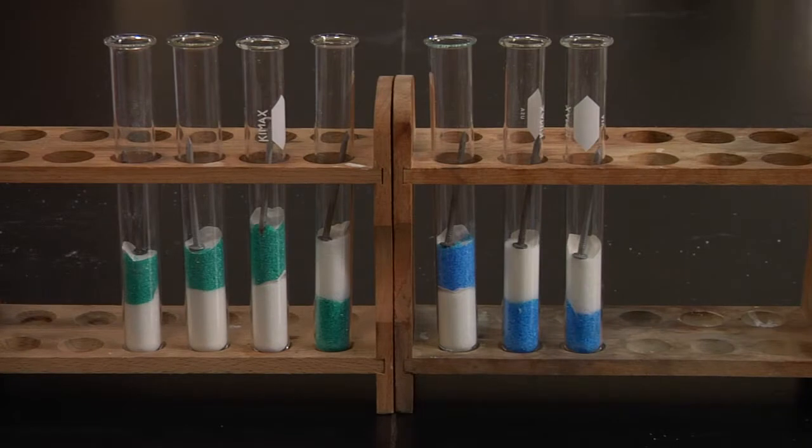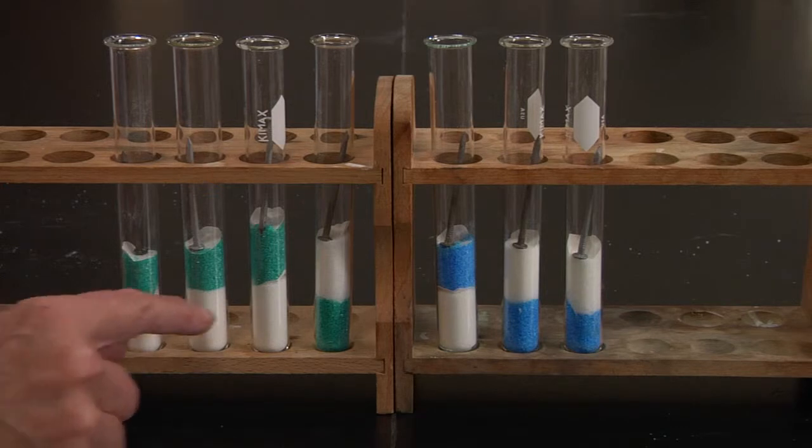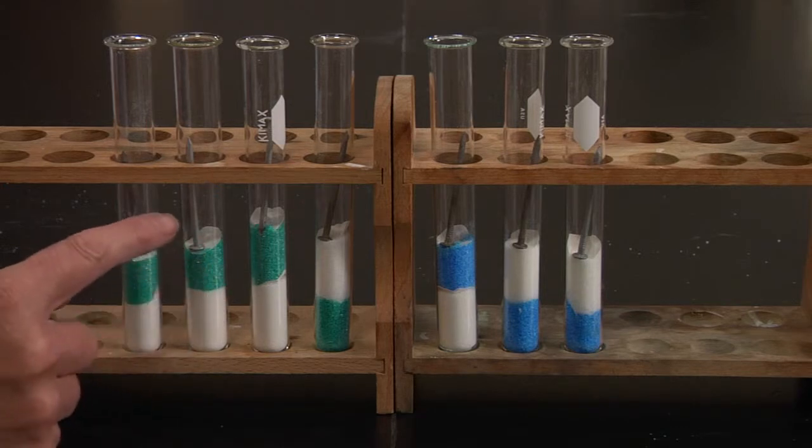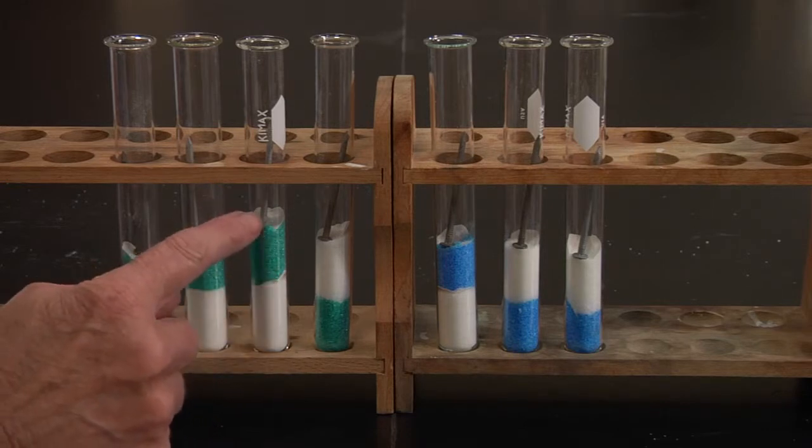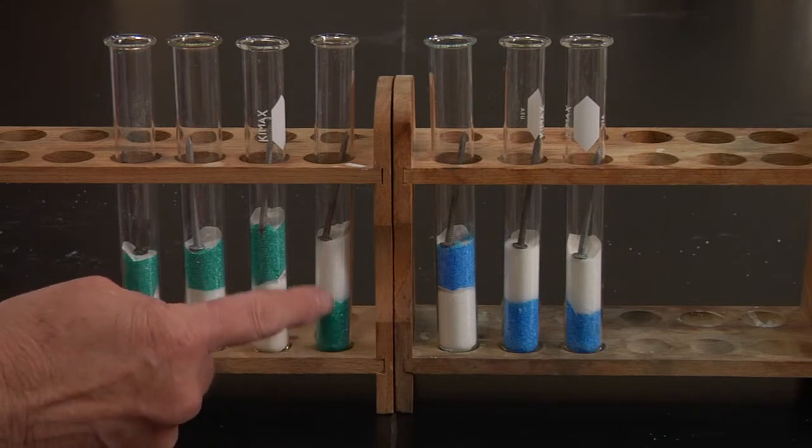Now here we have a number of permutations. Here we have an iron nail with copper chloride at the top and sodium chloride at the bottom. This is the same except it has a galvanized nail. This is the same except it has the nail pointing down. And this one we've reversed the copper chloride and the sodium chloride.